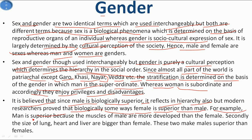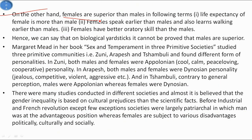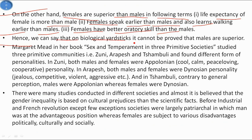It is believed that since males are biologically superior, it reflects in the hierarchy also. But modern researchers prove that biologically, in some ways females are superior to males. For example, males are superior in that their muscles are more developed and the size of lungs, heart and liver are bigger. Whereas females have greater life expectancy biologically, they speak earlier and learn walking earlier than males, and have better oratory skills. Hence, biologically it cannot be proved that males are superior.